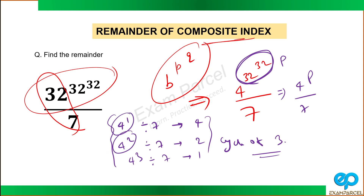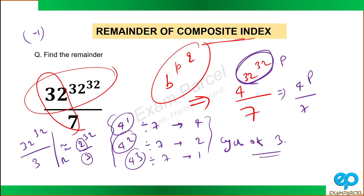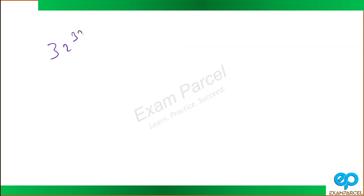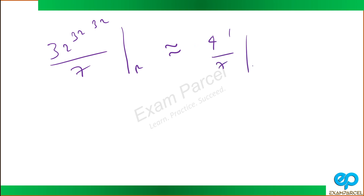This means we need to find which part of the cycle the exponent 32 raised power 32 belongs to. Our question reduces to finding the remainder of 32 raised power 32 divided by cycle length 3. This is equivalent to 2 raised power 32 divided by 3. And 2 is nothing but minus 1 as compared to 3, so this becomes minus 1 raised power 32, which is 1. So this big exponent is equivalent to 4 raised power 1 divided by 7, giving a remainder of 4.